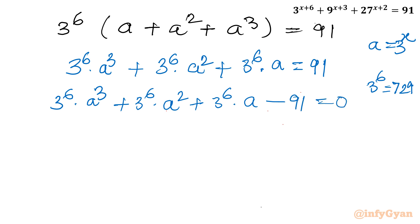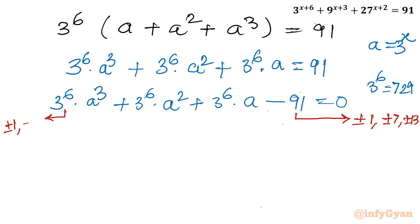Now I will use the rational root theorem and synthetic division method. First find the eligible factors of the constant term 91: ±1, ±7, and ±13. Then the factors of the leading coefficient 3^6: ±1, ±3, ±9, ±27, and so on.